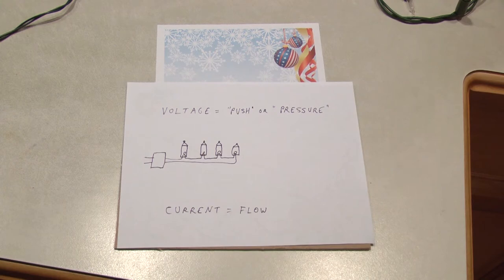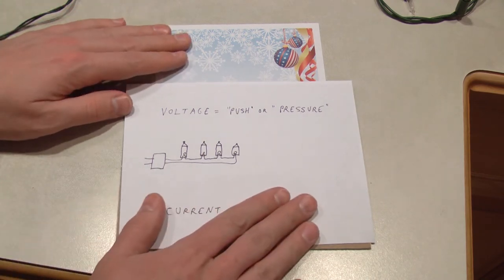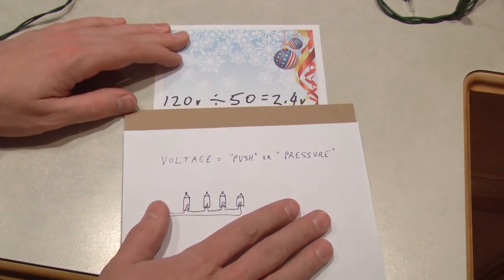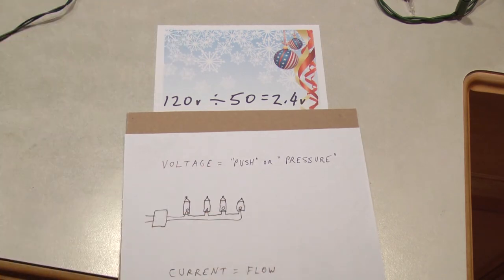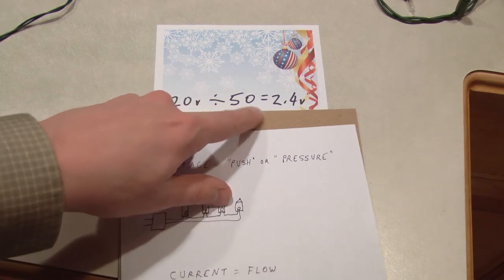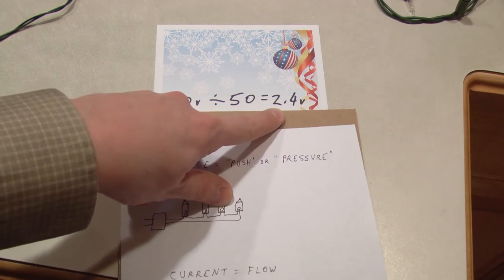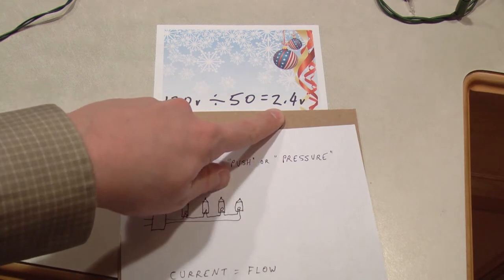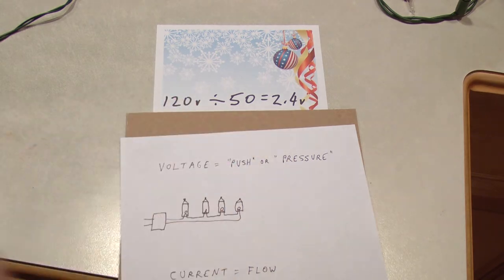Now because these bulbs are wired in series, you take the available voltage, let's say it's 120 volts, and you divide it equally among all the bulbs in the set, assuming that every bulb is identical in its characteristics. If you take 120 volts, divide it by a light set with 50 lights, that gives 2.4 volts per bulb. We'll round it off to 2.5 for our purposes today.